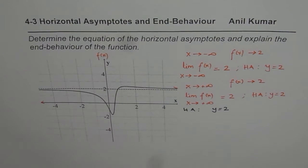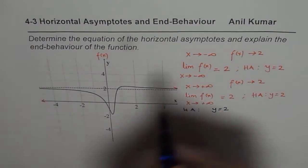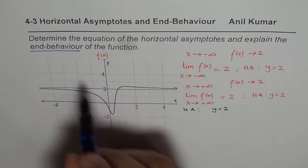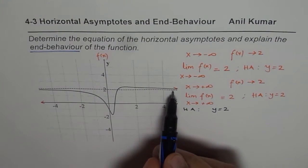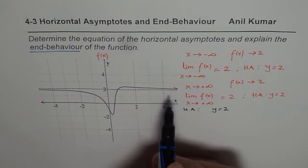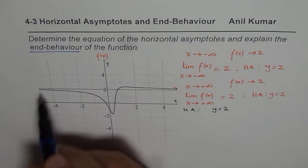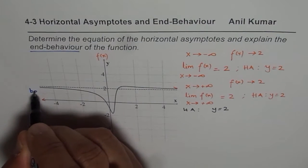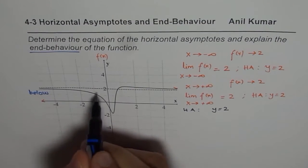The second part of this question is we need to explain the end behavior. End behavior really means we know the function is approaching 2, but we want to see whether it approaches 2 from above or below. Here you can see it is approaching from below — the value of the function is slightly lower than 2.